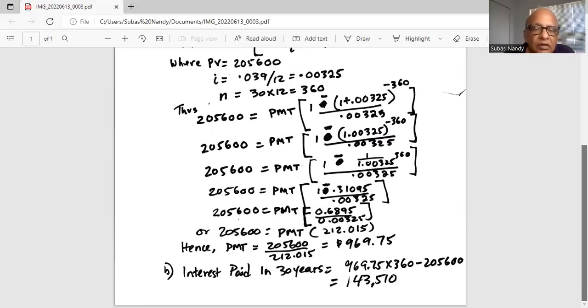So we get payment is 205,600 divided by 212.015, which is $969.75. This is the monthly mortgage payment amount for Susan.